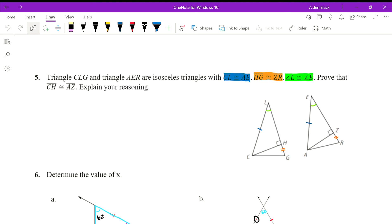For question 5, triangle CLG and triangle AER are isosceles triangles with line segment CL congruent to segment AE, marked in blue. HG is congruent to ZR, marked in orange, and angle L is congruent to angle E, marked in green. We need to prove that CH is congruent to AZ.